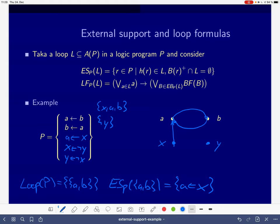But again, if we look at the supported models, there are these two guys. But there is also a third one, namely the one where y is true, and a and b somehow make each other true. So this is more or less this spurious supported model that we want to eliminate with the loop formulas.